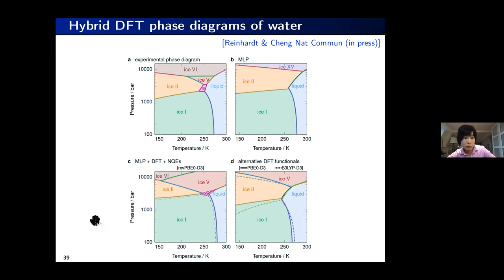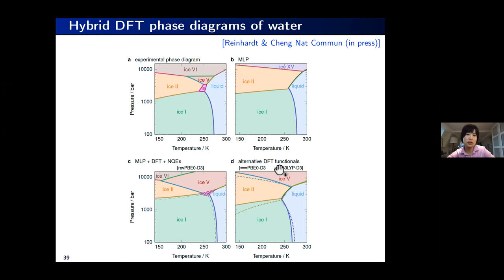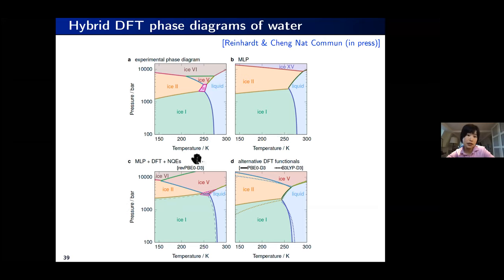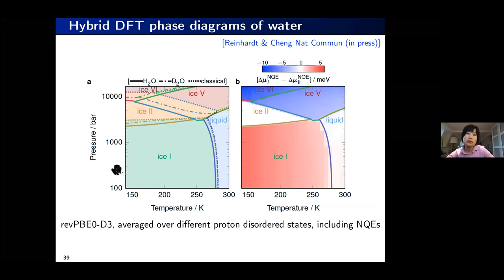We are also able to use this machine learning potential to compute the phase diagram of water. We have the machine learning prediction, always with correction terms on top, and we can correct not just to rev-B86b-D3 but also to different DFT levels of theory such as PBE0-D3 and B3LYP-D3, giving slightly different phase diagrams. Overall, the agreement with experiment is very good — better than existing empirical water potentials. Nuclear quantum effects play a very important role in shifting the phase boundaries.